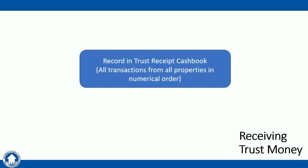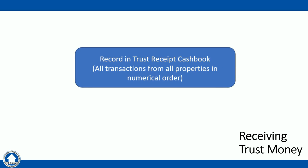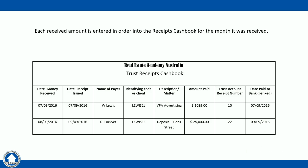Once the money has been received and banked, we then need to record it in the trust receipts cash book, recording transactions from all properties in numerical order for the month of operation. Each receipt that you have completed needs to be entered into the receipts cash book in numerical order.